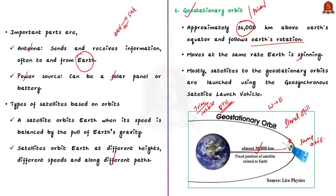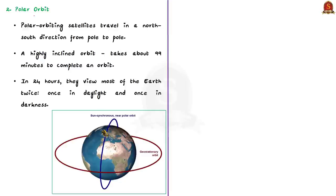Generally, satellites to geostationary orbits are launched using GSLV — Geosynchronous Satellite Launch Vehicle — which is more powerful compared to PSLV. Polar orbiting satellites travel in a north-to-south direction from pole to pole. As Earth spins underneath, these satellites can scan the entire globe one strip at a time. In this highly inclined orbit, the satellite moves around Earth from pole to pole, taking about 99 minutes to complete an orbit. In a 24-hour period, polar orbiting satellites will view most of the Earth twice — once in daylight and once in darkness.